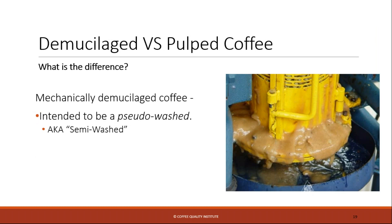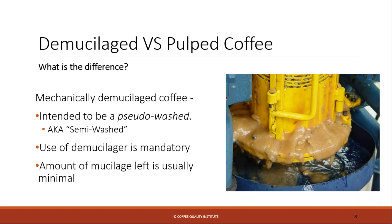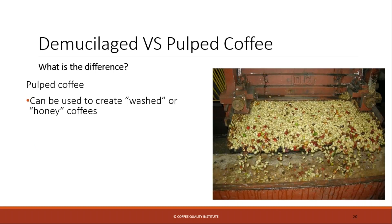So what is the difference between demucilaged and pulped coffee? The simplest difference is that mechanically demucilaged coffee goes through a mechanical demucilager — a certain type of machine. Its original intention was to be a kind of pseudo-washed coffee, meant to replicate the washed coffee profile. In demucilaged coffee, the machine — the actual demucilager — is mandatory, and it's intended to take off the pulp and the mucilage to leave a clean parchment to be dried. Pulped coffee goes through a pulper and can be used to create washed coffees, but also honey coffees, depending on how that coffee is dried.